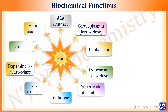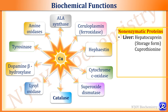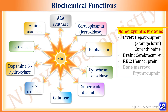Tyrosinase is the enzyme catalyzing melanin and other pigment production. Various amine oxidases are a group of enzymes oxidizing primary amines, for example, tyramine, histamine, and polyamines. These are the various copper-containing enzymes. Non-enzymatic copper-containing proteins include hepatocuprin in the liver, which is the storage form; cuprothionein is also present. The brain has cerebrocuprin, RBCs have hemocuprin, and bone marrow has erythrocuprin.